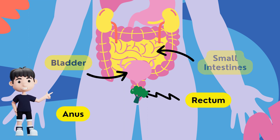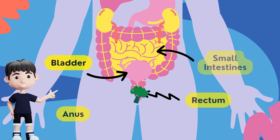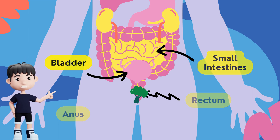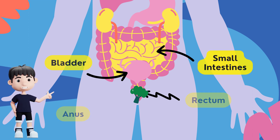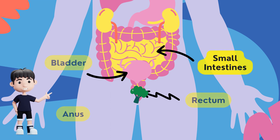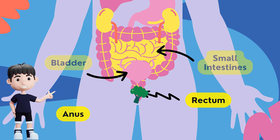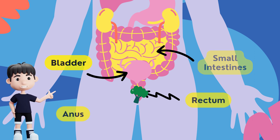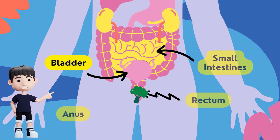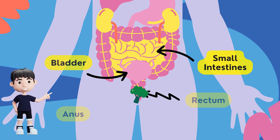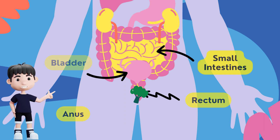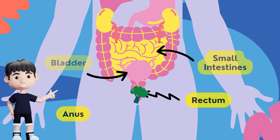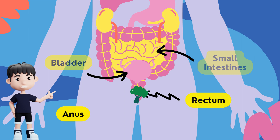Anus. The last part of the digestive tract, the anus, consists of pelvic floor muscles and two anal sphincters, internal and external. Together, their jobs are to detect rectal contents — whether they are liquid, gas, or solid — and to control when stool should and shouldn't be excreted from your body.